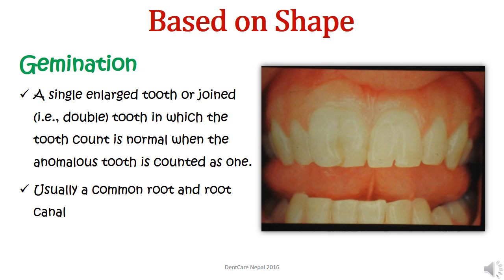Gemination is a single enlarged or joined tooth in which the tooth count is normal when the anomalous tooth is counted as one. Usually a common root and common root canal is present. In the figure, the maxillary central incisor appears as if it is trying to divide into two, but when we count this as one tooth, the total tooth count is normal.